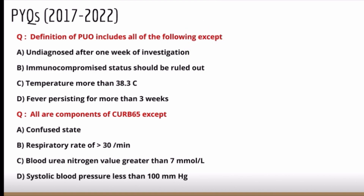Next question: all are components of CURB-65 except — confused state; respiratory rate more than 30 per minute; blood urea nitrogen greater than 7 mmol/L; and systolic blood pressure less than 100 mmHg. CURB-65 is a score which helps us assess the severity of pneumonia and decide whether to treat the patient on OPD, IPD, or ICU basis.